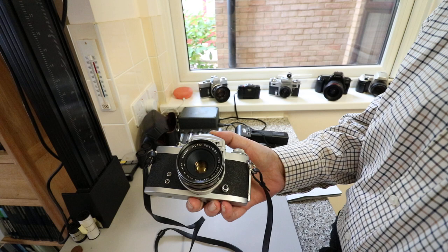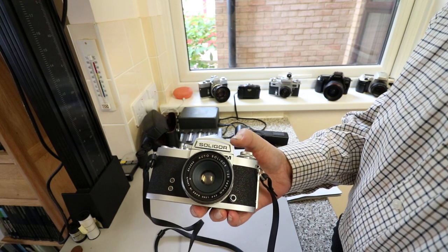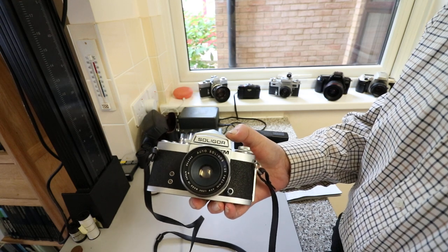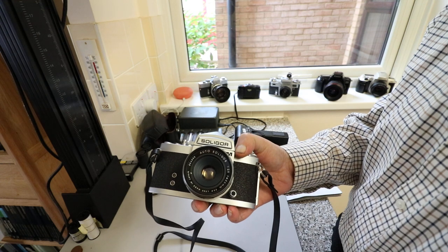This is a Miranda camera. They were badged. There was a Miranda TM, a Soligor TM, and also a Pallas, which I believe is what they were selling in Germany. There was a Pallas TM version as well.